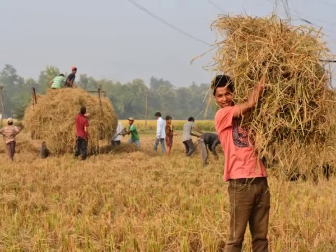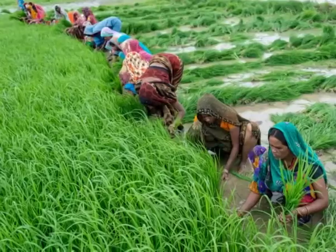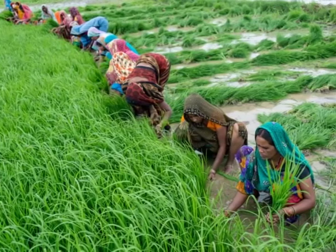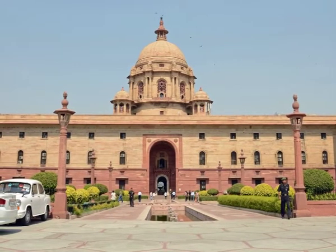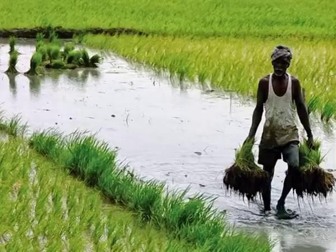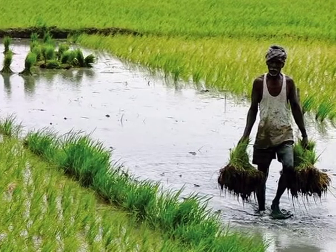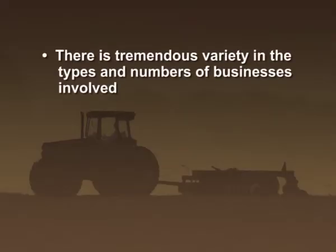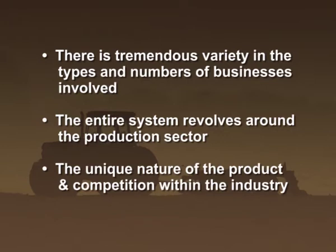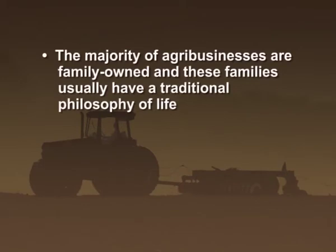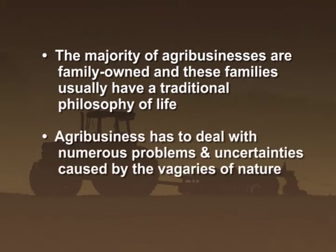Agribusinesses deal with the vagaries of nature. Agribusiness is always market oriented. They are by far vertically integrated, but some are horizontally integrated and many are conglomerated. There is a direct impact of government programs on the production and performance of agribusiness. Several factors differentiate agribusiness management from non-agribusiness management — there is tremendous variety in types and numbers of businesses, the entire system revolves around the production sector, the unique nature of the product, and competition within the industry. The majority of agribusinesses are family owned with a traditional philosophy of life.